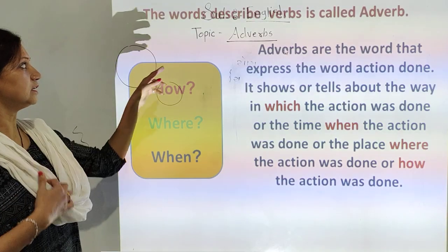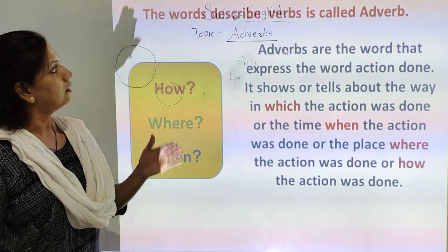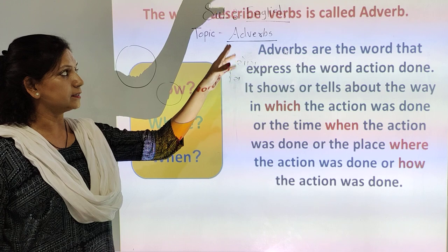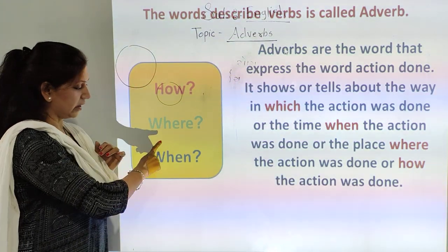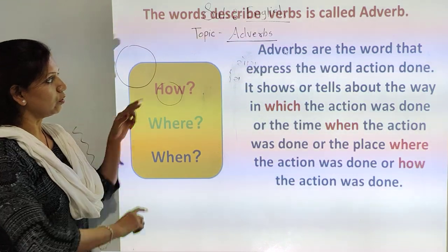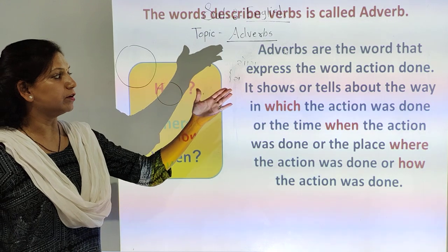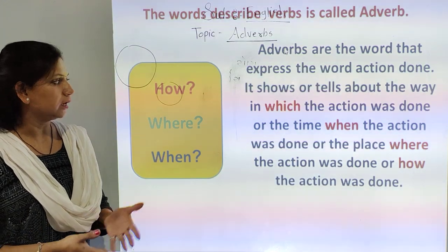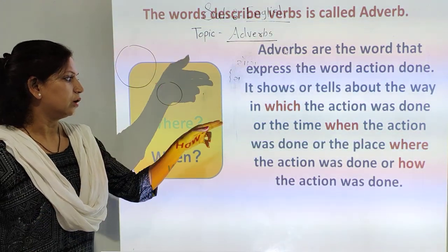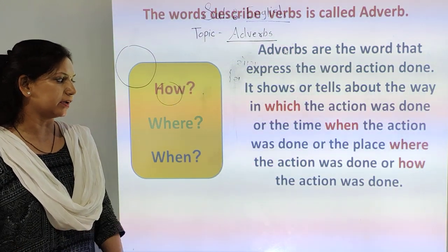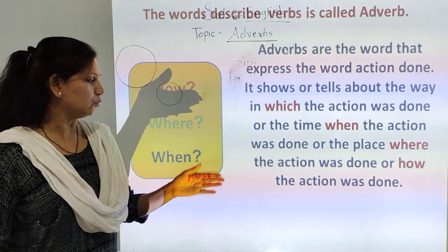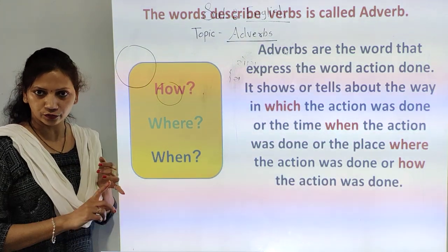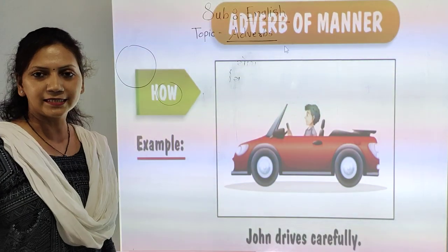The words that describe verbs are called adverbs. Adverbs describe how, where, and when. Adverbs are words that express the way in which an action is done. They tell more about how the action was done, the time when the action was done, or the place where the action was done. Adverbs describe how, where, when.